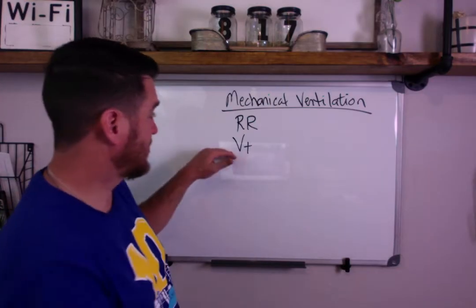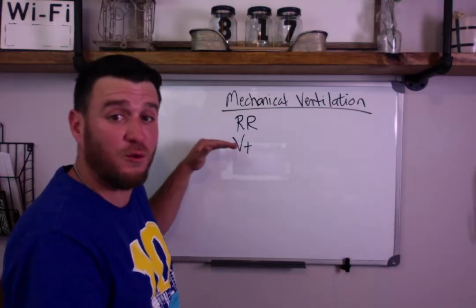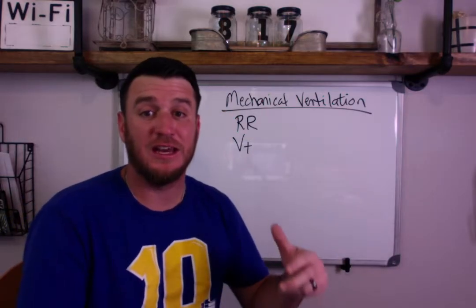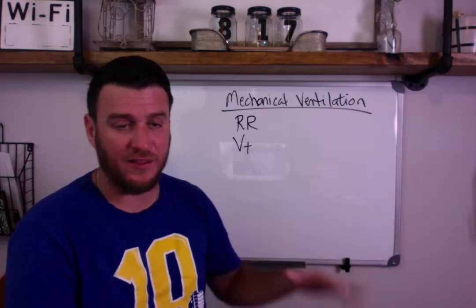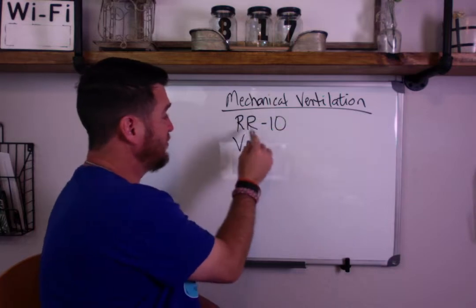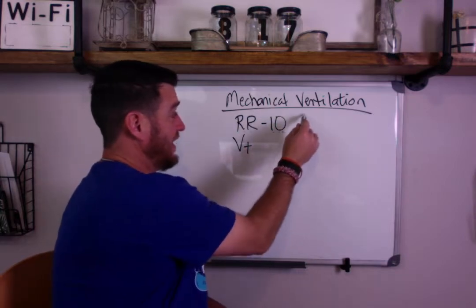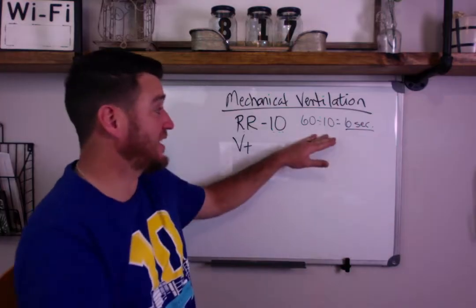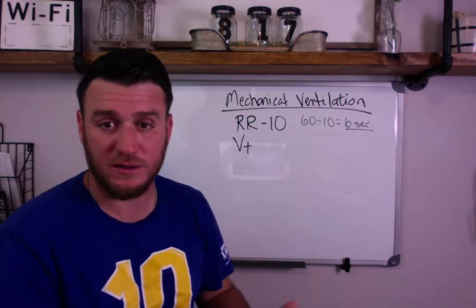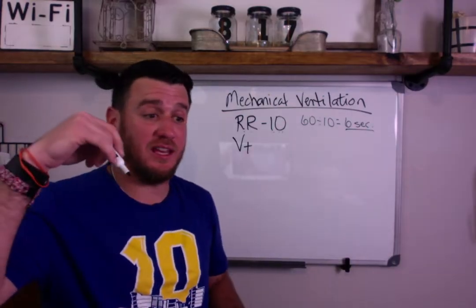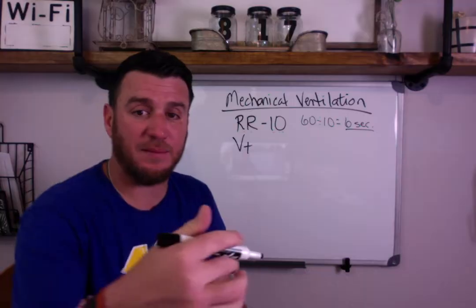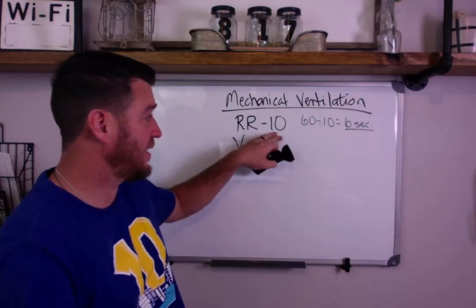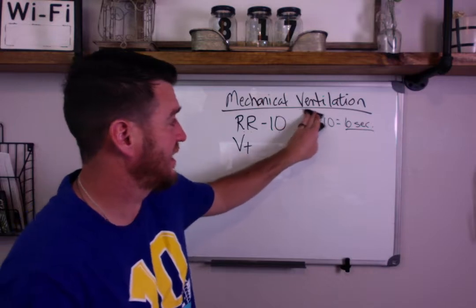When we talk about tidal volume, we're talking about a set amount of gas delivered for one breath. When we talk about respiratory rate, we're talking about how many breaths are going to be given within 60 seconds — this tells the ventilator how often to give a breath. So if you tell the vent to give 10 breaths per minute, then it does 60 divided by 10, which equals 6 seconds — it's going to give a breath every 6 seconds. This is also the trigger mechanism for your time-triggered breaths. If the patient's not breathing, the vent says: give 10 breaths a minute, that means give one every 6 seconds.